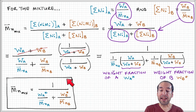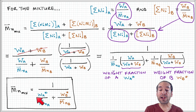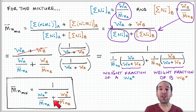Finally, I can rewrite this expression as follows: the number average molecular weight of the mixture is 1 over the sum of the weight fraction of A divided by the number average molecular weight of A, plus the weight fraction of B divided by the number average molecular weight of B.